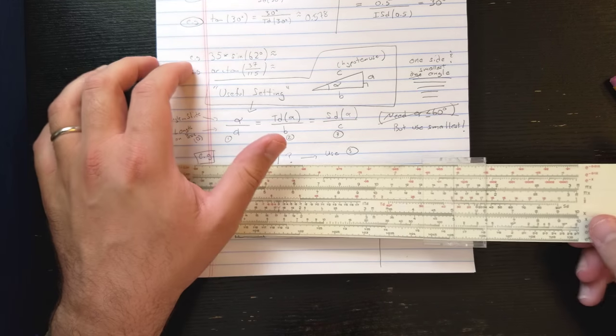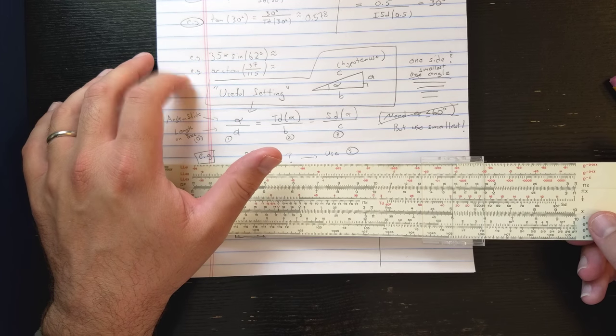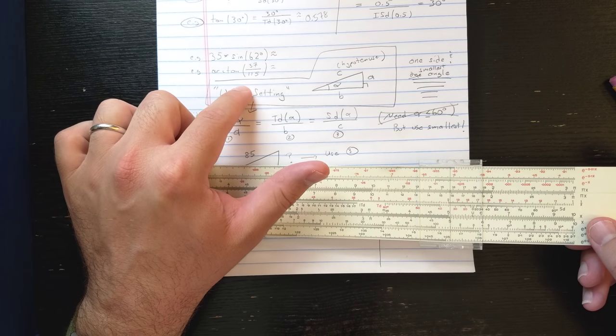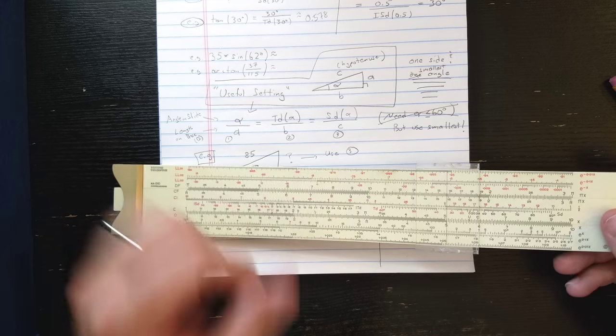Let's see a couple of computations of the type you would need to solve triangles. So 35 times sine 62 degrees and arc tan 37 over 115. So let's do this first one first.